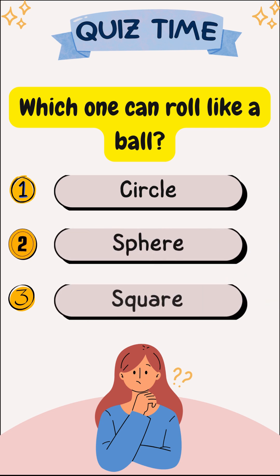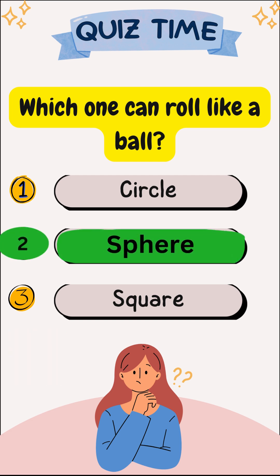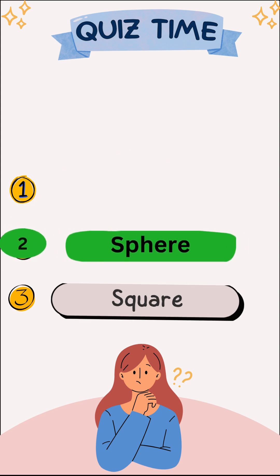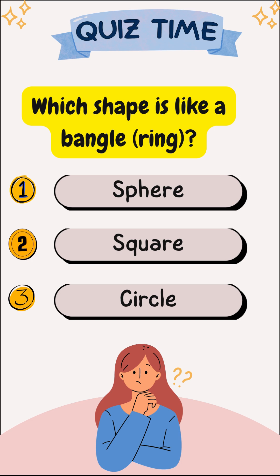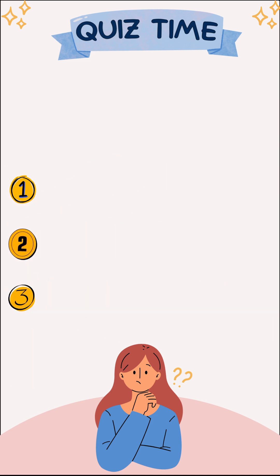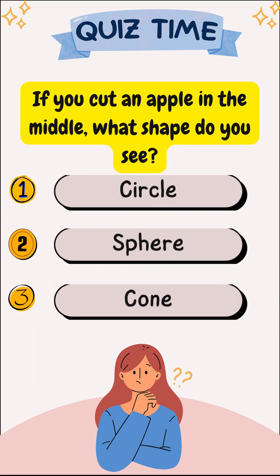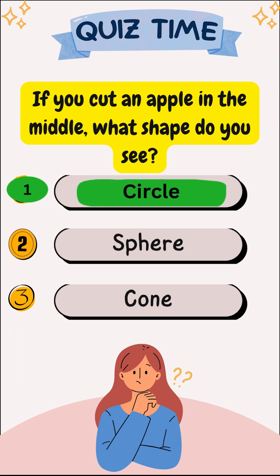Which one can roll like a ball? Sphere. Which shape is like a bangle or ring? Circle. If you cut an apple in the middle, what shape do you see? Circle.